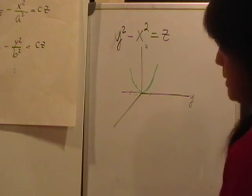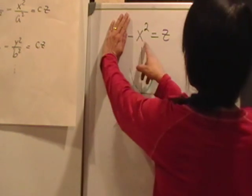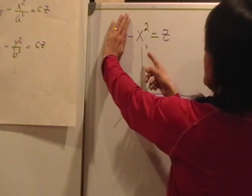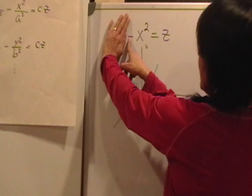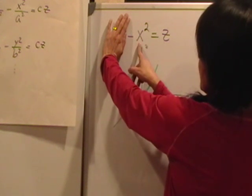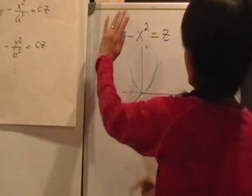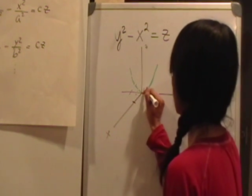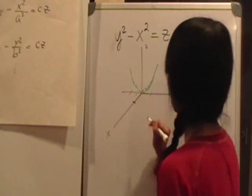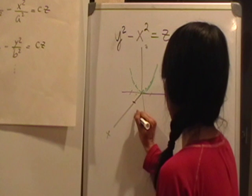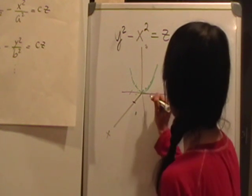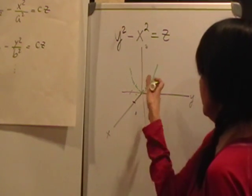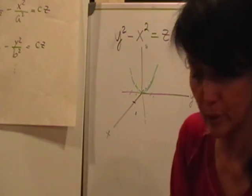If I cover y, I get negative x squared equals z. That's also degree two and degree one, so it's a parabola with vertex at the origin. But notice there's a minus sign, so when x equals plus or minus one, z equals negative one — the parabola opens downward.